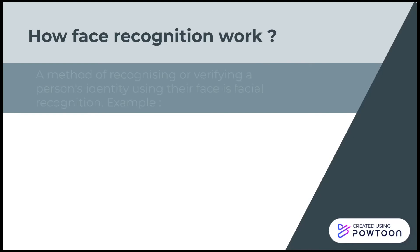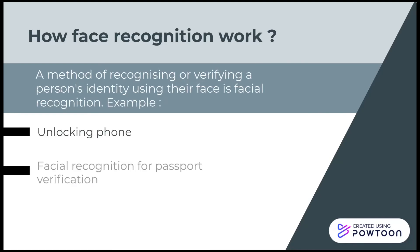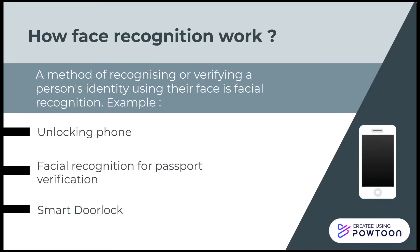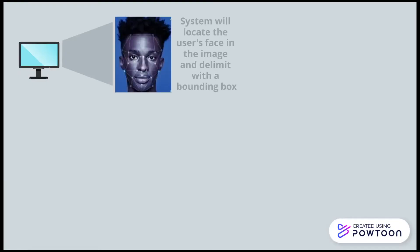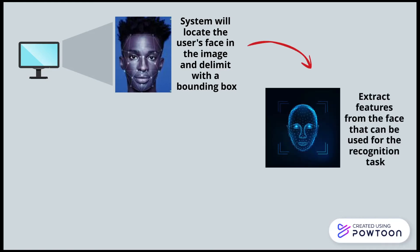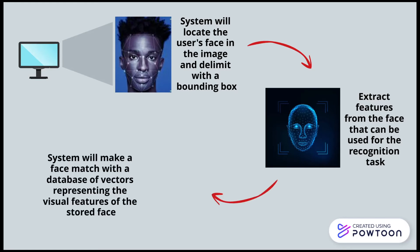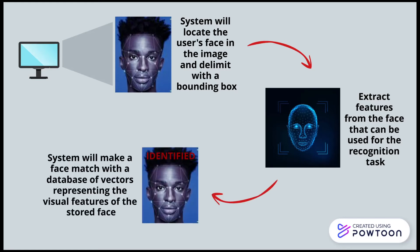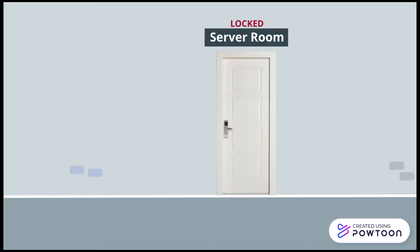How does face recognition work? A method of recognizing or verifying a person's identity using their face is facial recognition. This is how it will work: the system will locate the user's face in the image and delimit it with a bounding box. Next, it extracts features from the face that can be used for the recognition task, and the system will make a face match with a database of vectors which represent the visual features of the stored face.